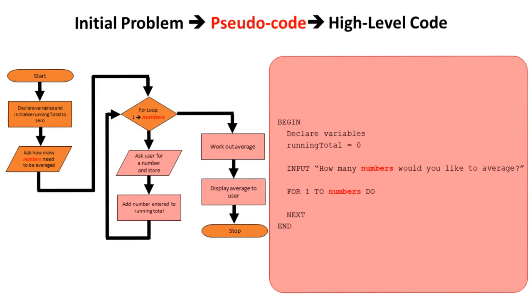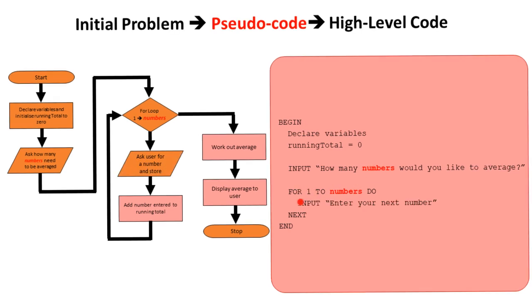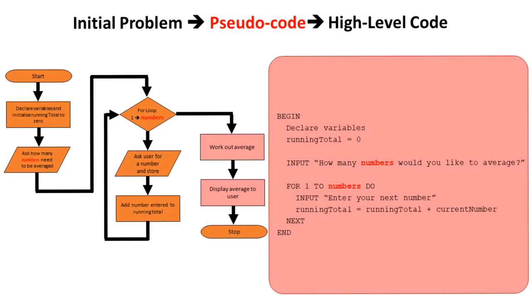I then know I want to loop, so here's my loop, for one to the number of times. And each time around the loop, I want to input the next number and then add that number to the current running total. That's the loop done.